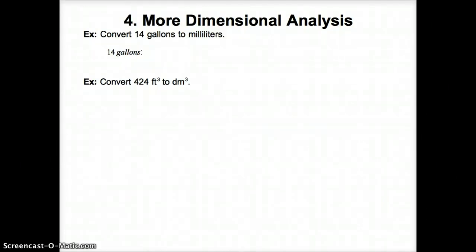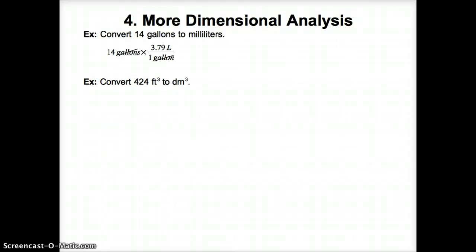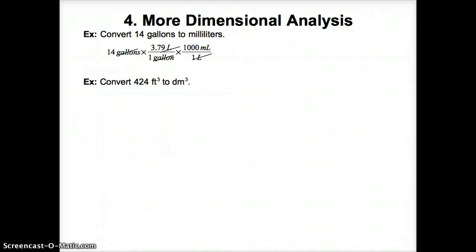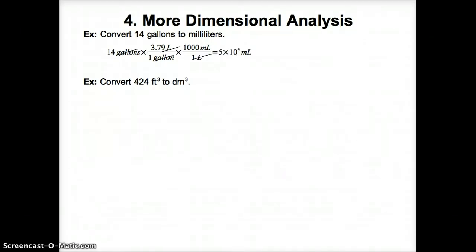Let's try two more dimensional analysis problems. First, convert 14 gallons to milliliters. I write the given quantity: 14 gallons. There are 3.79 liters in 1 gallon, so I multiply 14 gallons by 3.79 liters over 1 gallon — gallons cancel, leaving liters. Next, 1,000 milliliters equals 1 liter, so I multiply by 1,000 milliliters over 1 liter — liters cancel, leaving milliliters. Dividing the product of the top by the product of the bottom gives 5 times 10 to the 4th milliliters.